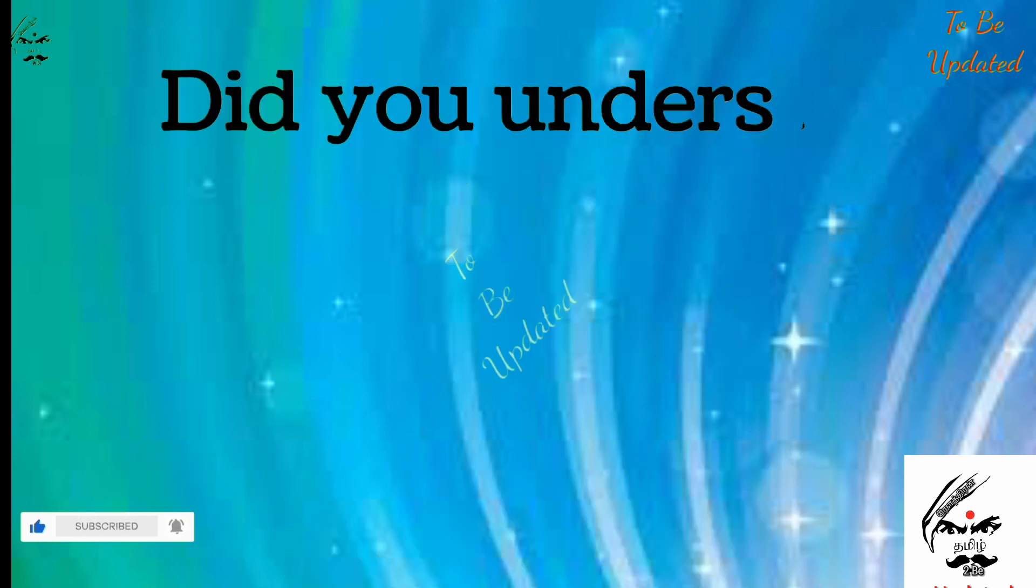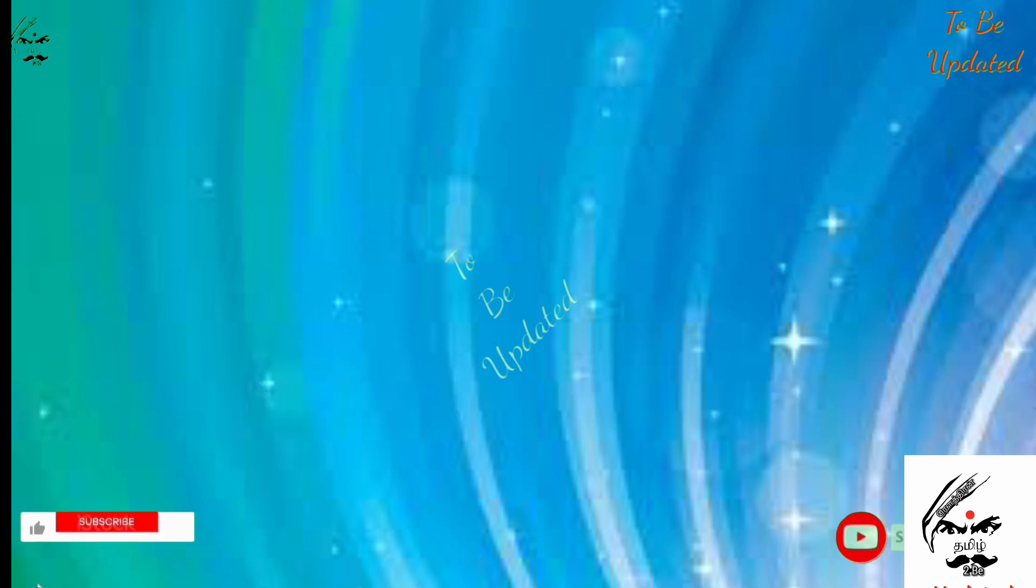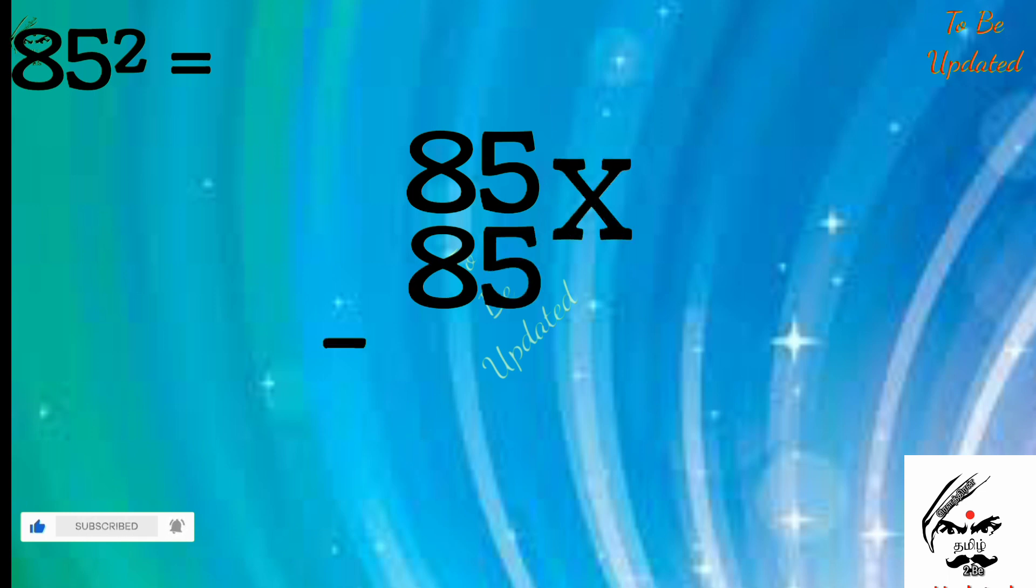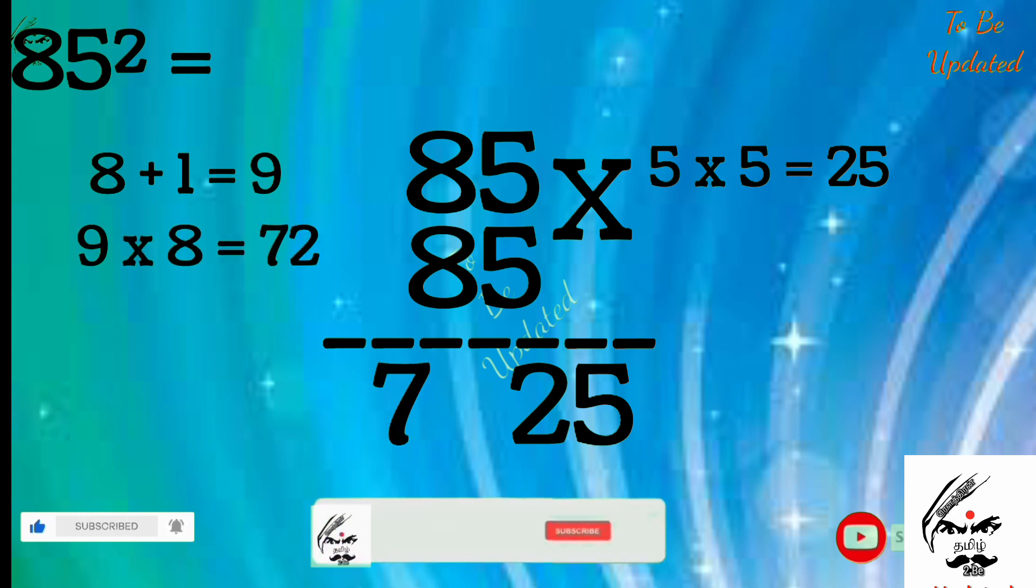If you don't understand, you will see another example. 85 square means 85 into 85. We are just going to multiply the unit digit, 5 times 5 is 25. The first number is 8, so we add 1 along with the 8 to get 9. 9 times 8 is 72.